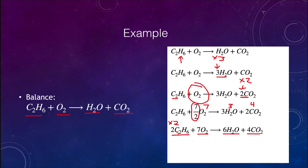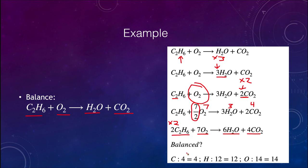All we've done is multiply each coefficient by the same number, which keeps the equation balanced. Let's check: carbon has four on each side. Hydrogen — two times six is 12, six times two is 12 — has 12 on each side. Oxygen: 14 on the left (7 times 2), and six plus eight is 14 on the right. Yes, we are balanced.